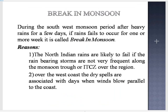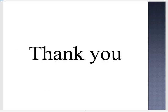Next is the break in monsoon. During the southwest monsoon period, after heavy rains for a few days, if rain seems to cease for one or more weeks, it is called a break in monsoon. The reasons include: North Indian rains are likely to pause if rain-bearing storms are not frequent along the monsoon trough or ITCZ over the region. Over the west coast, dry spells are associated with days when winds blow parallel to the coast. That's all for today.